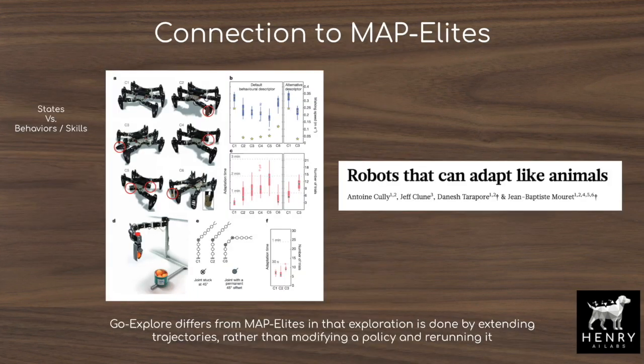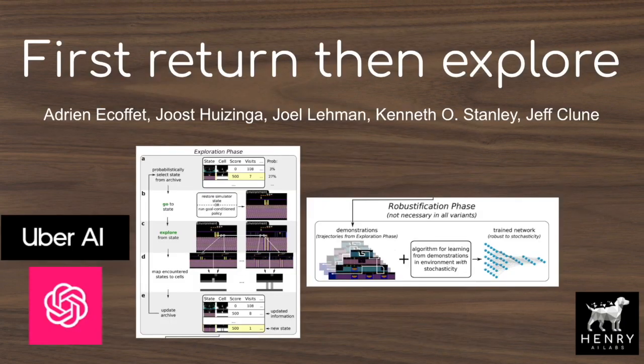In addition to superhuman performance on Atari games, the authors test the algorithm on a robotic pick-and-place task in simulation. This is an example of an extremely sparse reward environment in which direct optimization can't even come close to solving it with a billion frames of experience.